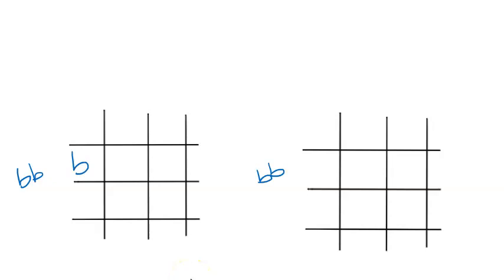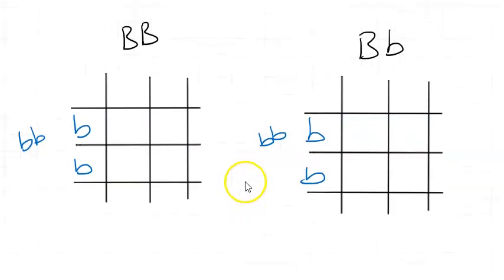So we will breed our brown eyes rabbit with a blue eyes rabbit, and the possible genotypes of the brown eyes rabbit would be capital B, capital B, and capital B, lowercase b. So if you just pause the video again here and see if you can fill out these Punnett squares.